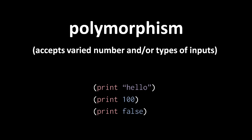So, for example, in Python, the print operator is polymorphic in that it accepts different types of inputs. You can pass a string, a number, or a boolean, and whatever you pass, the print operator will print a text representation of that value on the console.